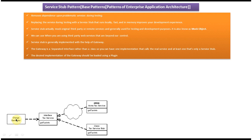Here you can see a ChargeGenerator and an interface TaxService, which has a getTaxInfo method. This interface is implemented by the web service ACME Tax Service, and this getTaxInfo method provides the implementation of the TaxService interface method. Another class, TaxServiceStub, also provides an implementation of this getTaxInfo method. In a real-time scenario, the ChargeGenerator will call the getTaxInfo method of the ACME Tax Service and do some calculation in real time.